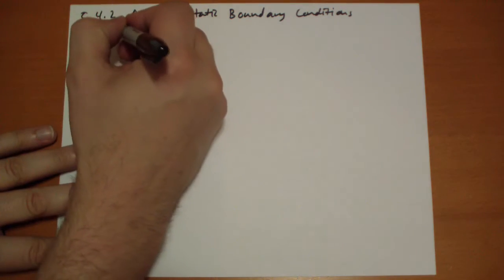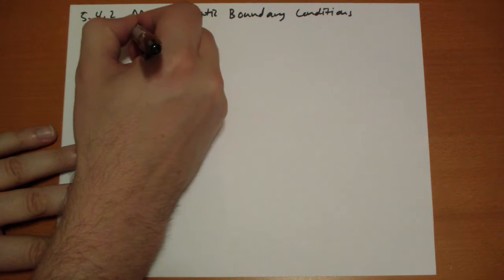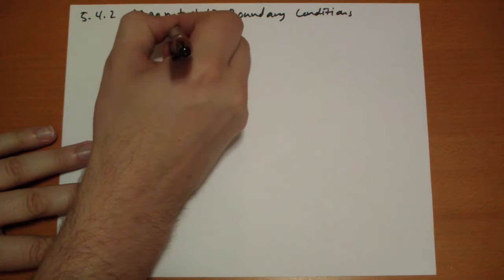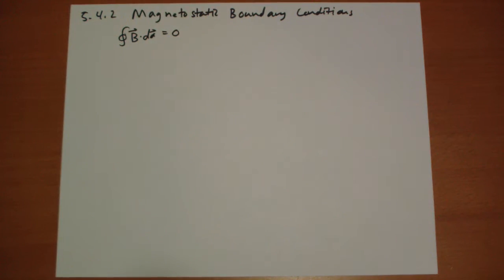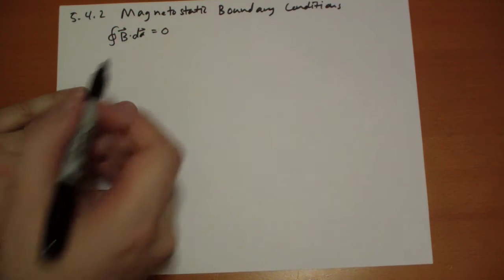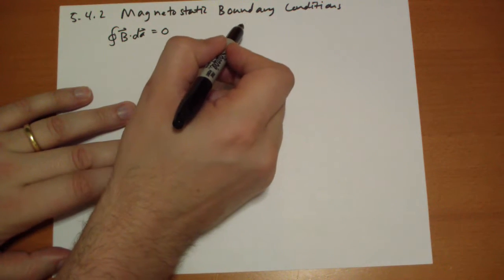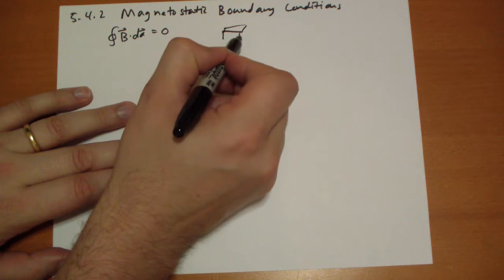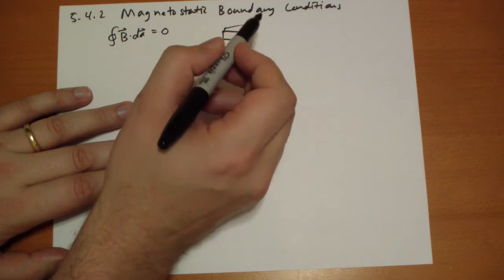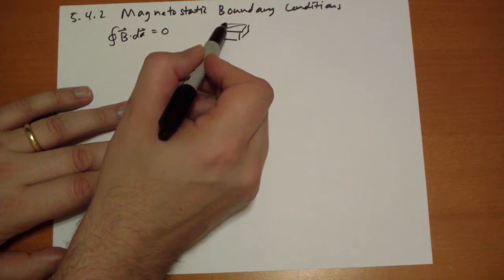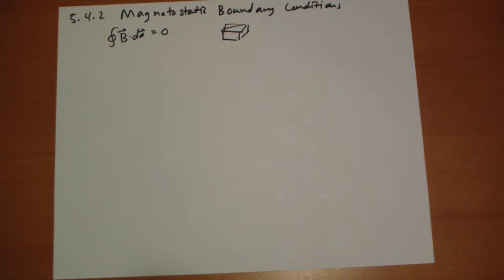So we have this equation, which basically comes from the divergence of B being zero. And we're going to take our little surface and we're going to draw a pillbox. And this is a terrible, terrible drawing.